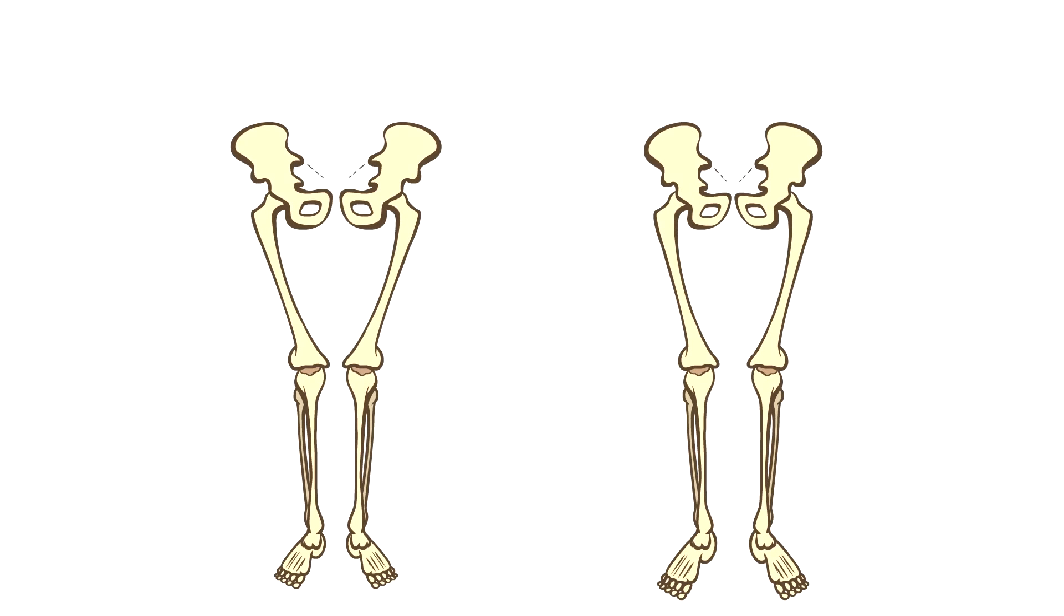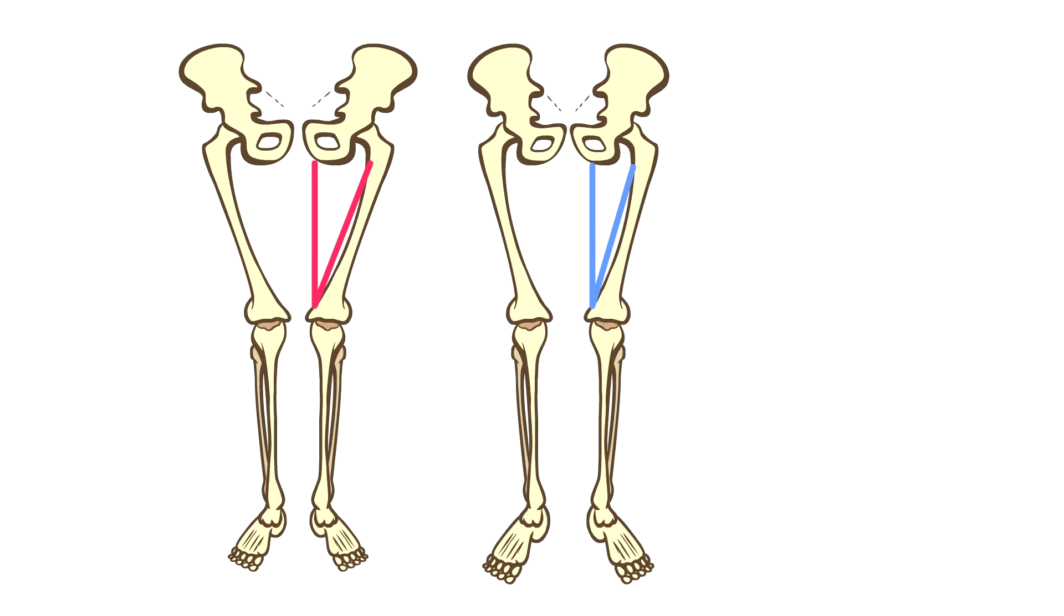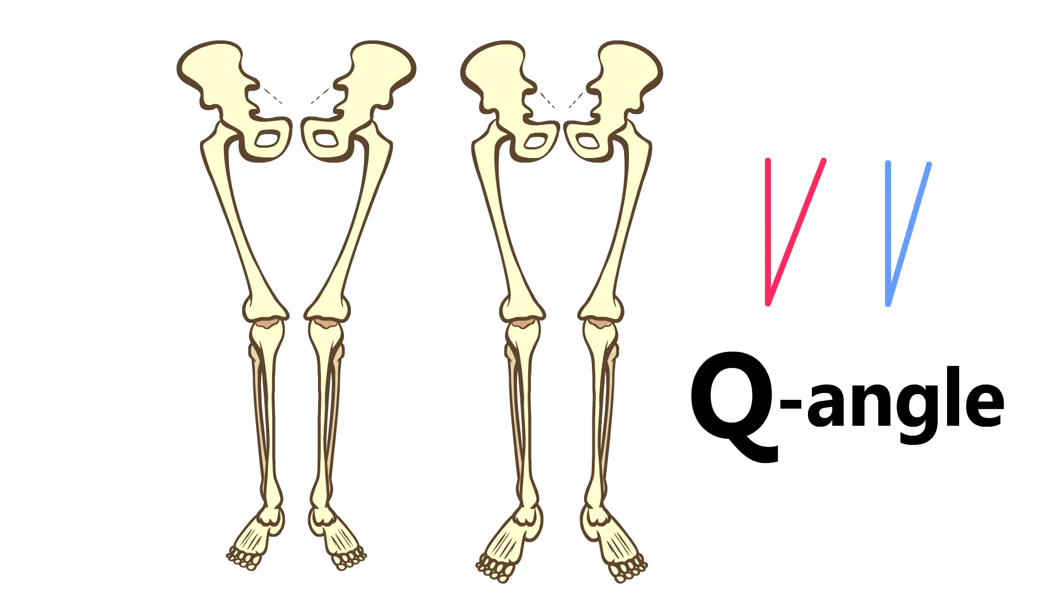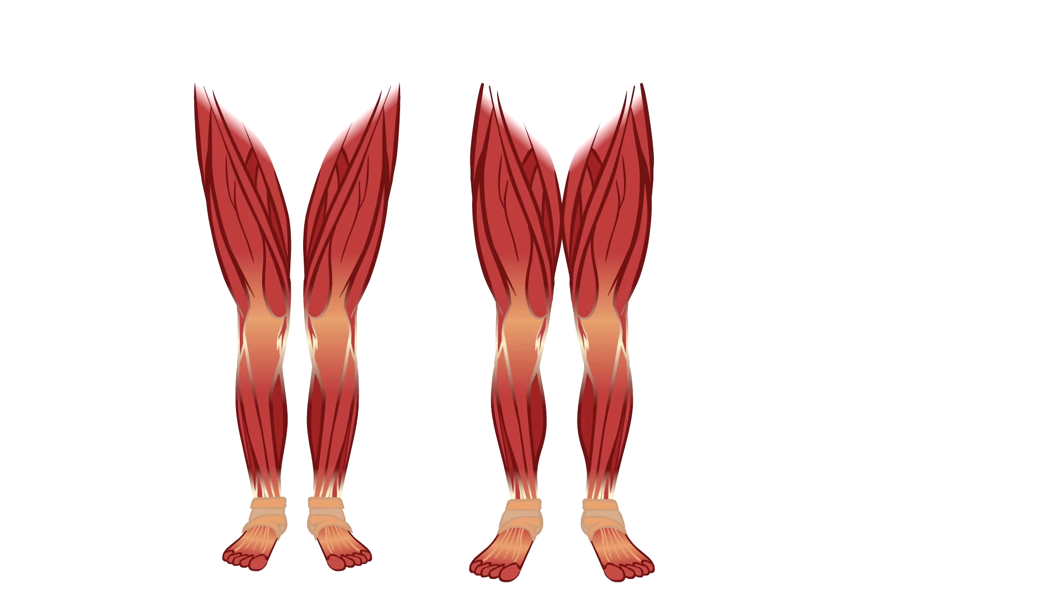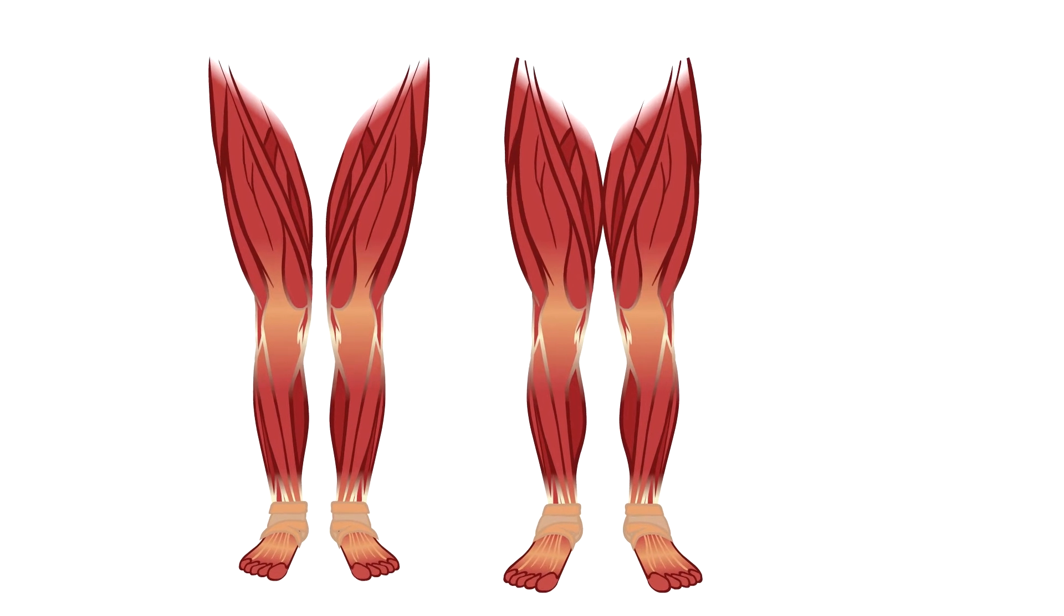During and after puberty, a girl's pelvis is wider than a boy's pelvis, and that creates a greater Q angle, which is the angle from your hip to your knee. And because a girl's muscles are slower to develop than boys, these two circumstances make you much more prone to injury.